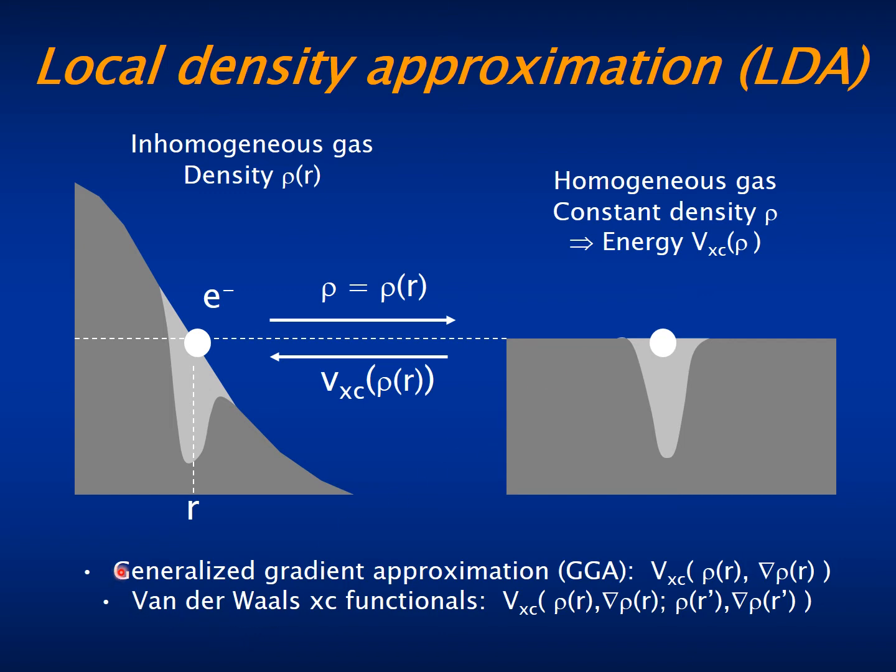In the generalized gradient approximation, the potential depends not only of the density at that point, but also of the gradient of the density at that point. So it is a two-variable function.